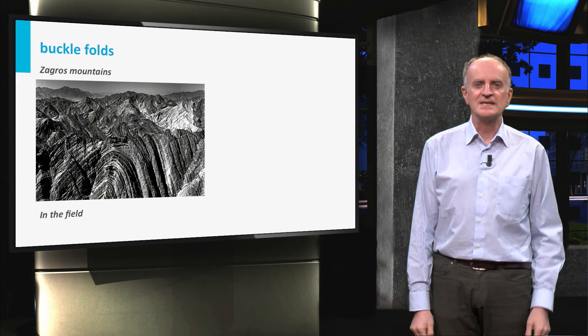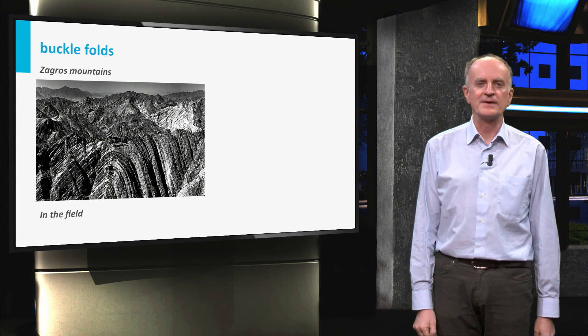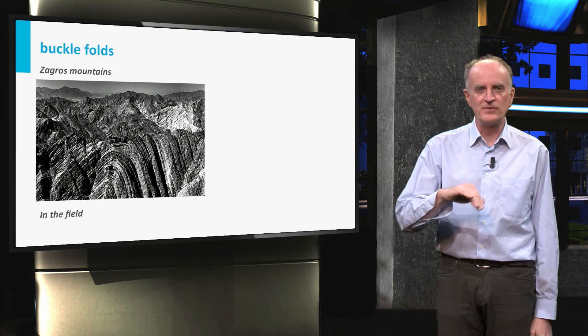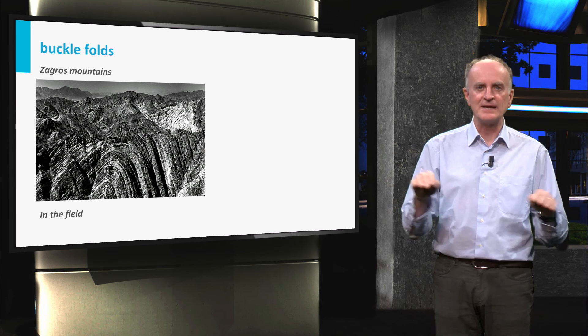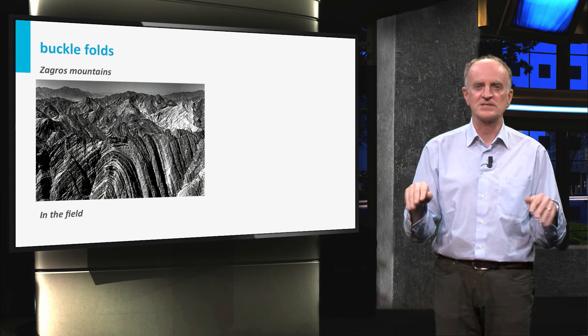Similar to what we've seen for faults, folds rarely come alone. Trains of buckle folds are found in areas where the rigid group of layers is underlain by easily deformed rocks such as evaporites.